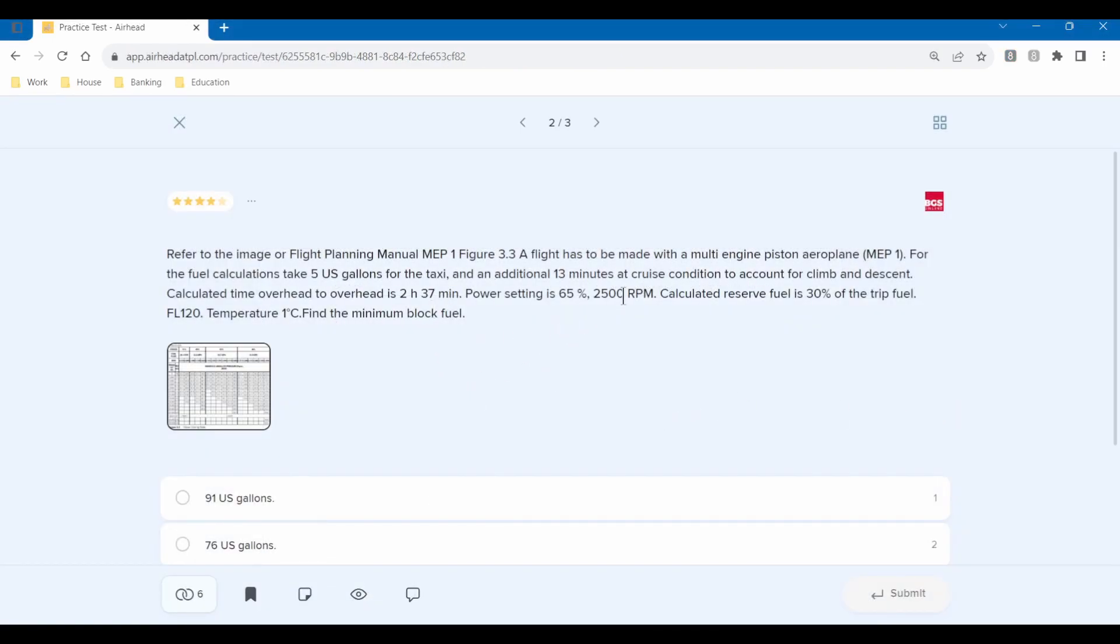In this question we're going to be using the cruise tables to calculate the cruise fuel burn and therefore the fuel that we will need to load at the gate, or our block fuel. Block fuel is made up of taxi, trip, contingency, alternate, additional, final reserve, and extra fuel. We have some of those elements already given: taxi fuel is 5, trip fuel is nothing because that's what we're trying to figure out, contingency is 5%, and reserve is 30%.